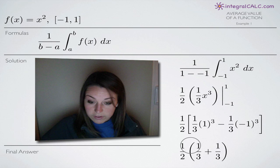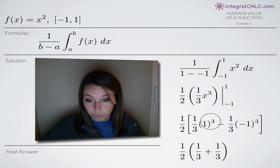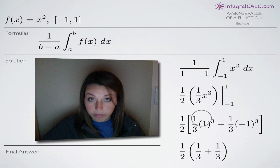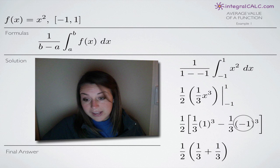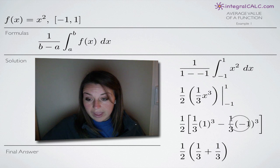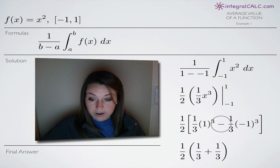So we still leave this 1 half out in front here. Of course, 1 cubed is just 1 so this first term becomes 1 third. And then negative 1 cubed is a negative 1. So we get 1 third times a negative 1. And because we have that double negative with this negative here and the negative in between, this becomes a positive.